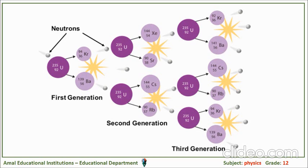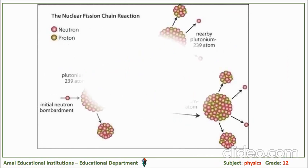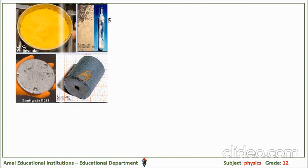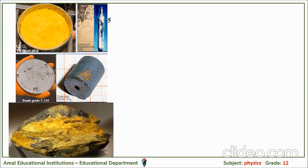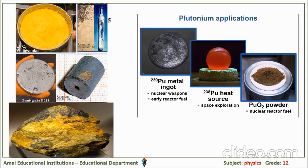The moderator is withdrawn to stop the nuclear reaction. Regarding the fuel: uranium oxide is melted and processed into a yellow cake — uranium is a heavy solid. Uranium comes from mines, for example in Africa. Plutonium-239 is used for nuclear weapons and early reactor fuel; plutonium-238 is used as a heat source for space applications; and plutonium oxide as powder is responsible for nuclear reaction fuel.